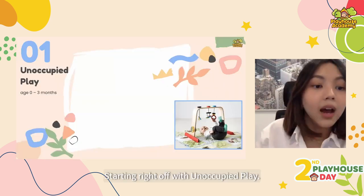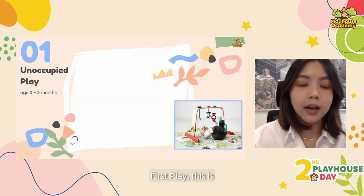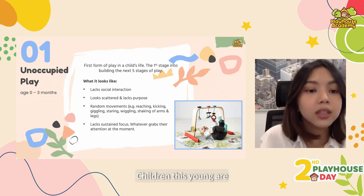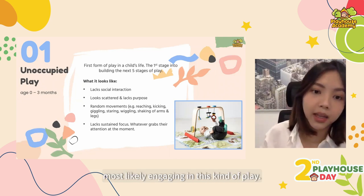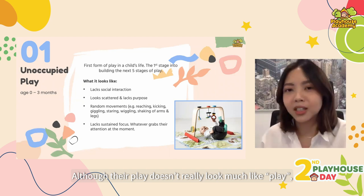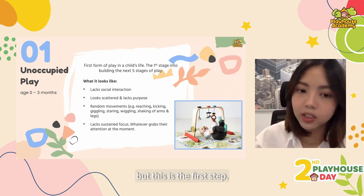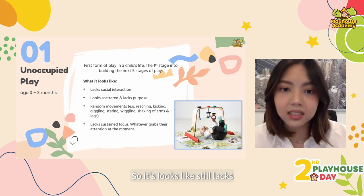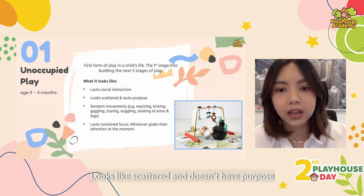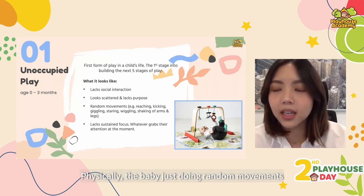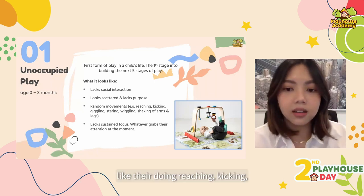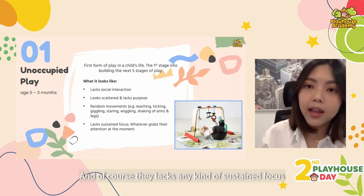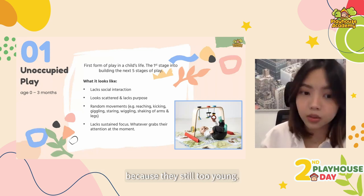Starting right off with unoccupied play — this is most commonly seen happening with children ages zero to three months. Children this young are most likely to engage in this kind of play, although their play doesn't really look much like playing, but this is the first step. It still lacks any kind of social interaction, looks very scattered, and doesn't have a purpose. Physically it looks like the baby is just doing random movements — a lot of reaching, kicking, giggling, and wiggling around. They lack any kind of sustained focus because they're so young.